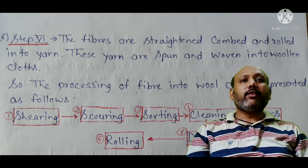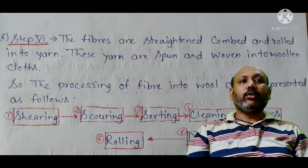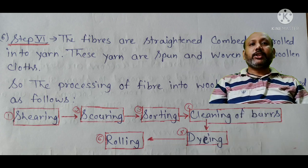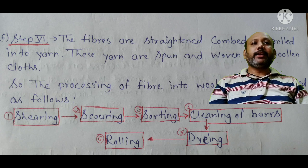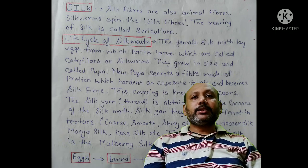So the processing of fibers into wool can be summarized as follows: shearing, scouring, sorting, cleaning of burrs, dyeing, and rolling.